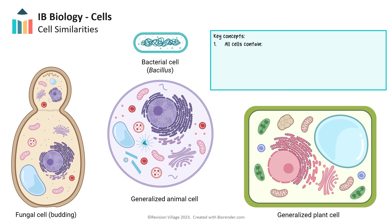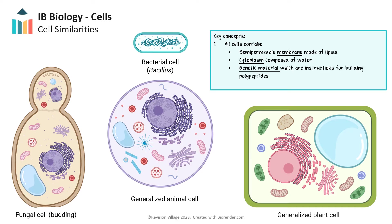When looking at cellular structure, there are a few features common to all cells regardless of cell type. Cells can be most broadly categorized as prokaryote and eukaryote, with eukaryotes having further cell types such as fungi, plant, and animal. All cells have a semi-permeable membrane composed of lipids that allows them to establish homeostasis. Cells have a cytoplasm composed mainly of water where chemical reactions like hydrolysis and condensation can take place. All cells have genetic material with instructions for building polypeptides and ribosomes to assemble them. These polypeptides fold into complex, three-dimensional structures to form functional proteins that carry out numerous activities within the cell and contribute to the formation of structures both inside and outside the cell.